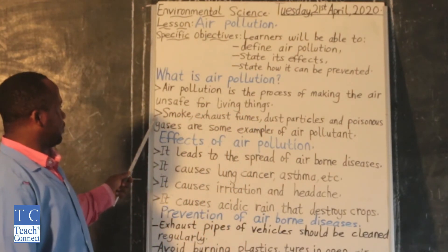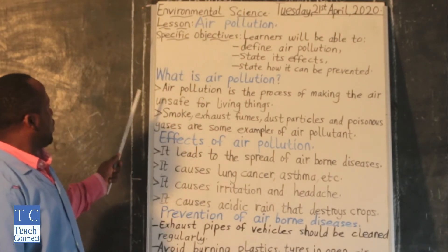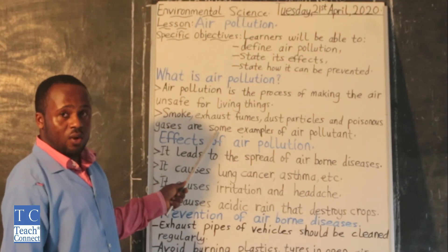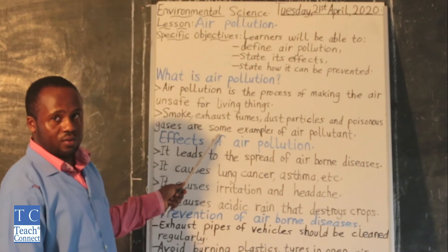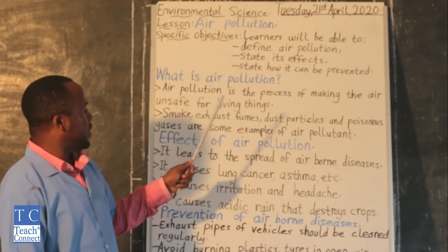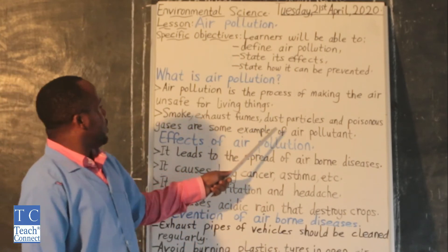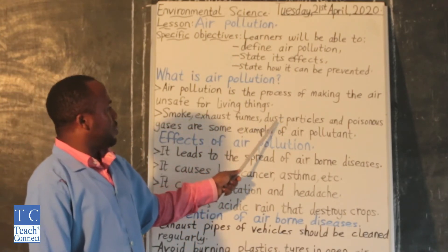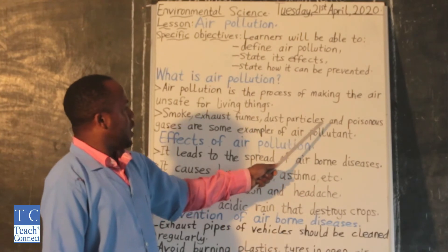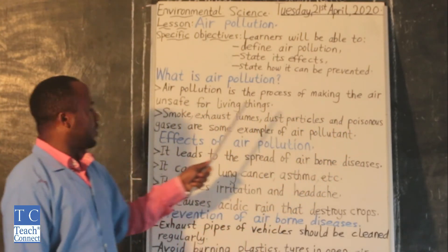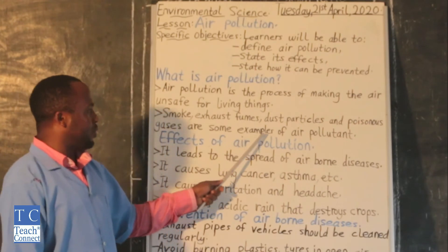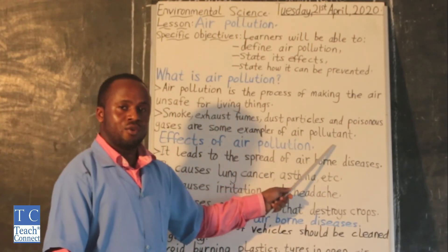The second point: smoke, exhaust fumes — like what we saw coming out from the car — dust particles, and poisonous gases are some examples of air pollutants.